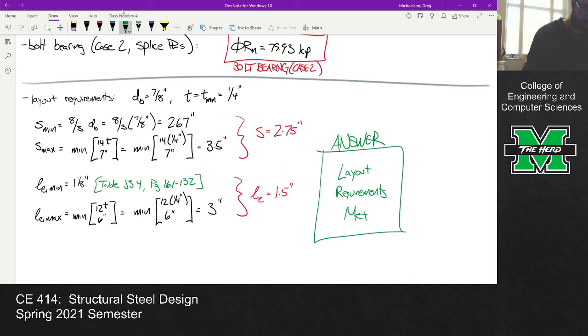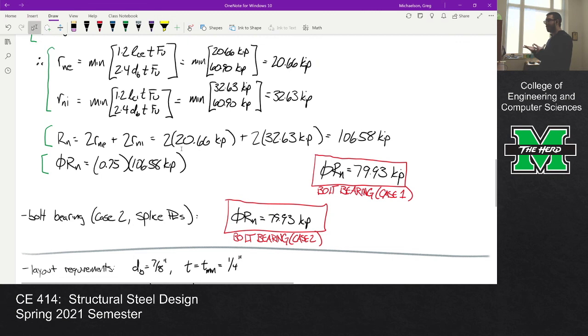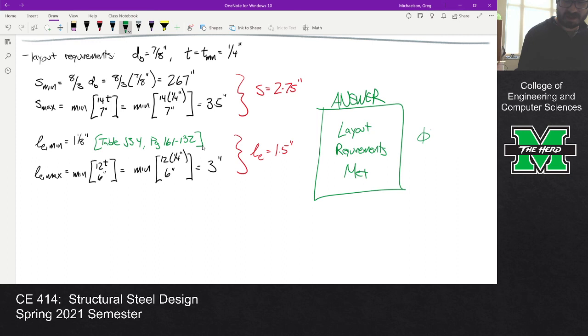To summarize the problem, the layout requirements were met. As for the capacity, we've got three numbers to consider: our bolt shear capacity which was 194.8, and our two capacities for bolt bearing which are both 79.73. For this problem they happen to be the same. So we know our layout requirements are met. What is the capacity of this section? It is 79.9 kips.